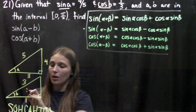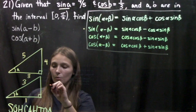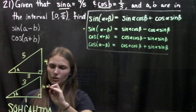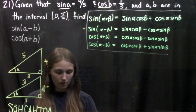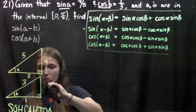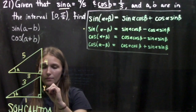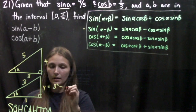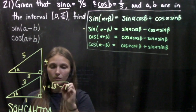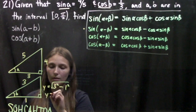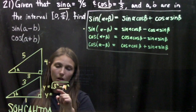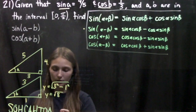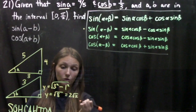For triangle B, we apply the Pythagorean theorem. We'll call the missing side Y. Y equals the square root of 3 squared minus 1 squared, which is the square root of 9 minus 1, so the square root of 8 — which simplifies to 2√2. Now we have our completed triangles.